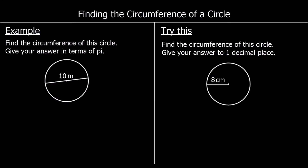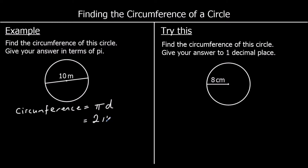Finding the circumference of a circle. To find the circumference of a circle, we can use one of two formulas: either pi times the diameter, pi times d, or 2 times pi times the radius. It doesn't matter which one we use — they are the same, they get the same answer.